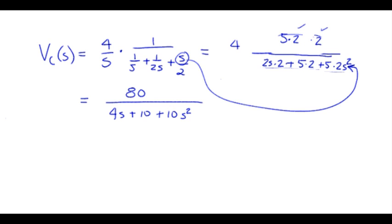So a standard form is to have a unit coefficient on the highest order of power in the denominator. So let's divide top and bottom by 10. So 8 on top. I'll write these in order from highest order S down to lowest order. Plus 0.4 times S plus 1.